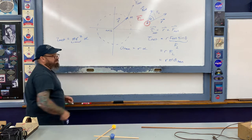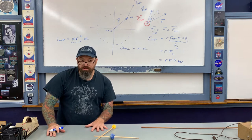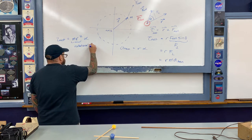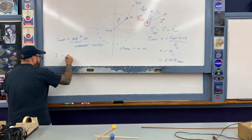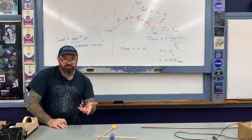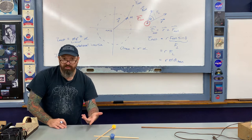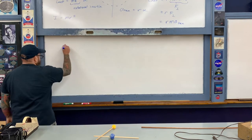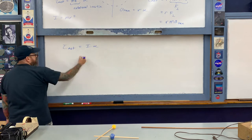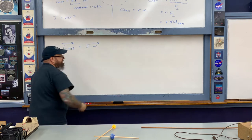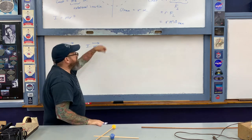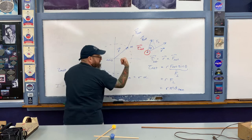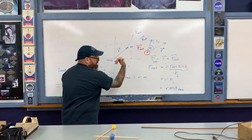This gives us net torque equals mr²·alpha. The quantity mr² appearing in front of alpha is called the rotational inertia, also known as the moment of inertia, written as capital I. So I equals mr². We can now write the rotational analog of F equals ma as: net torque equals I times alpha. The direction of the net torque vector is the same as the direction of the angular acceleration vector.